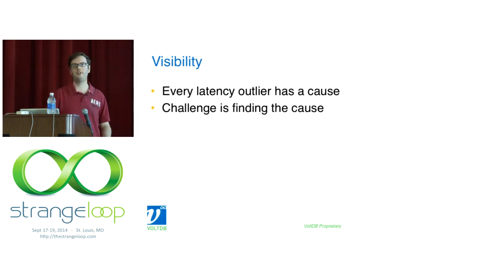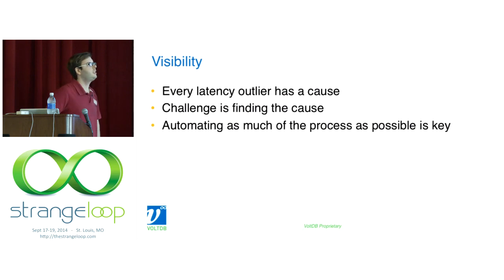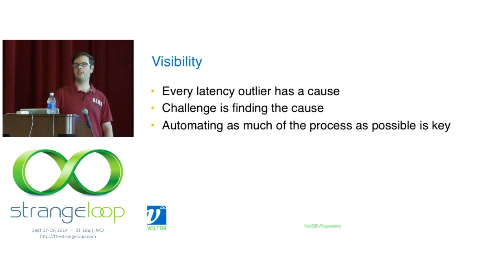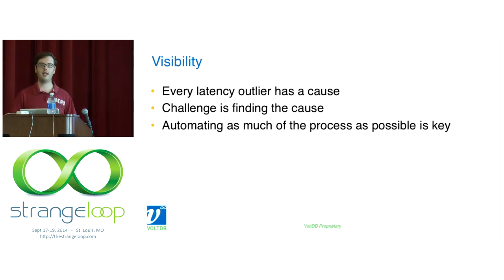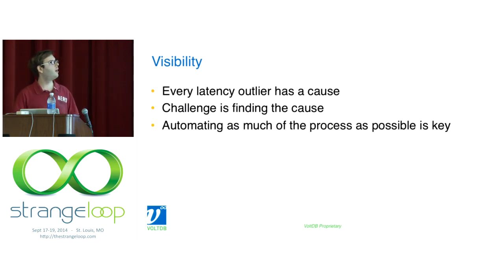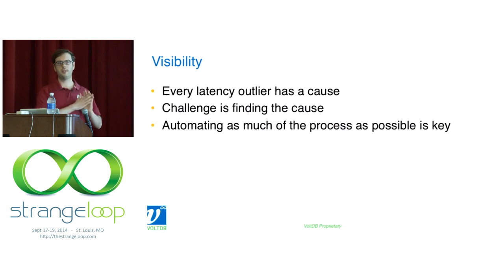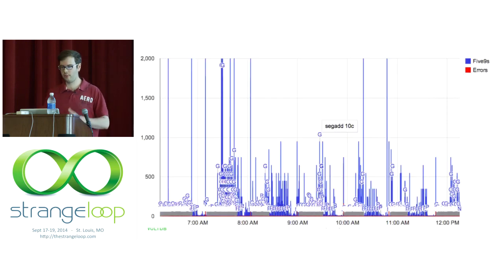Given such breadth in root causes, visibility becomes really important — visibility into your application and into the environment. Every latency outlier has a cause; the challenge is finding it. Automating the collection of metrics and running benchmark workloads is critical. When you've automated performance data collection, you get a history, and if you discover a latency spike later, you can binary-search back to when it started and correlate it with code changes.